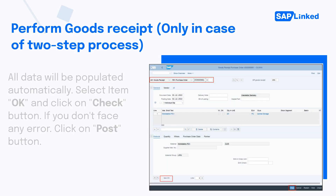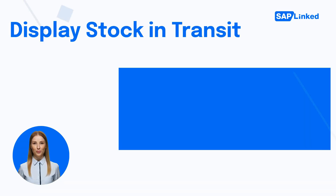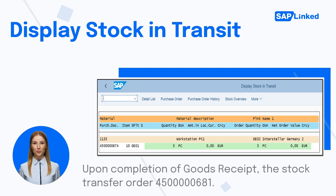To do goods receipt, go to Transaction Code MIGO. From the drop-down list, choose 01 Goods Receipt and R01 Purchase Order, and enter the stock transfer order number. All data will be populated automatically. Select item OK and click on the Check button. If you don't face any error, click on the Post button. Upon completion of goods receipt, stock in transit will be disappeared for the stock transfer order.